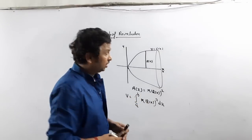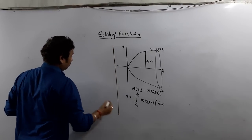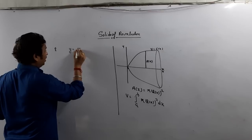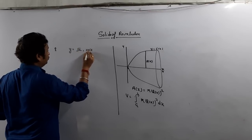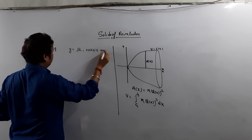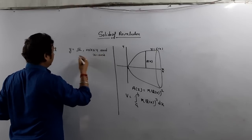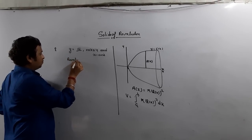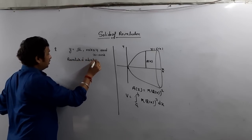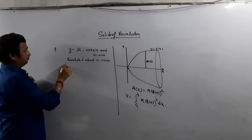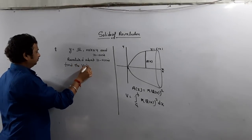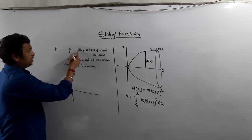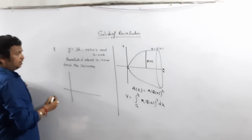Now let's do a question. Suppose a curve is given by y equals √x, with x varying from 0 to 4, and the region is bounded. If it is revolved about the x-axis, find the volume. y equals √x is a parabola — y² equals x — and since y is always positive, it opens to the right.